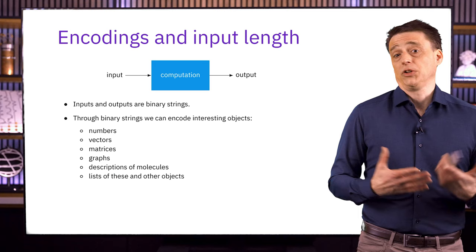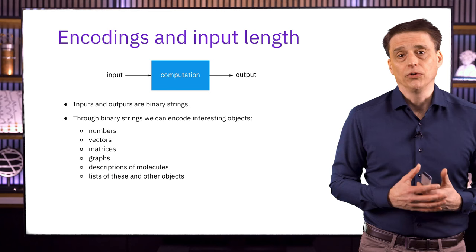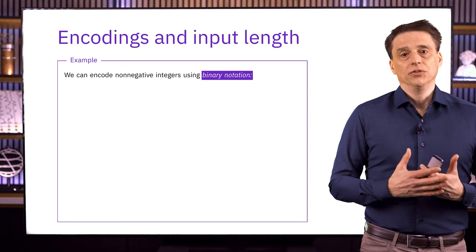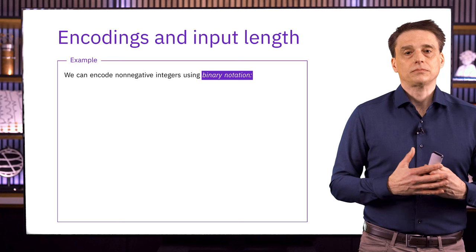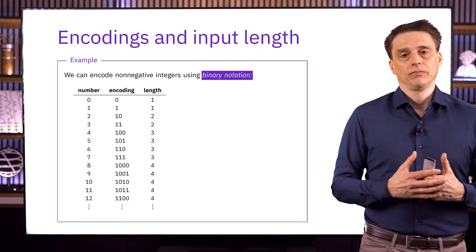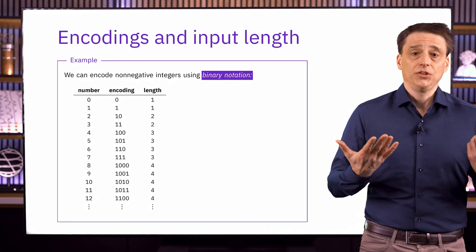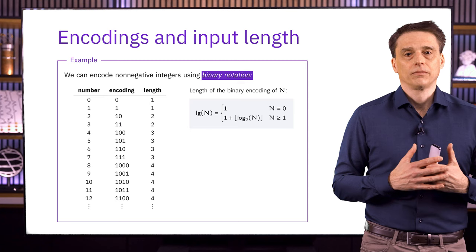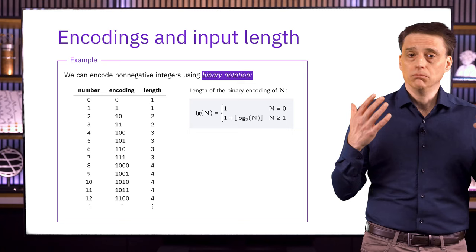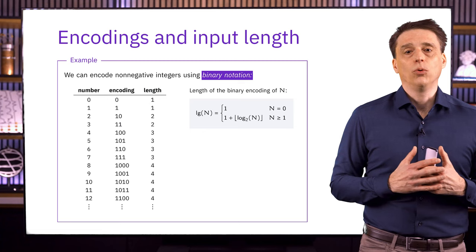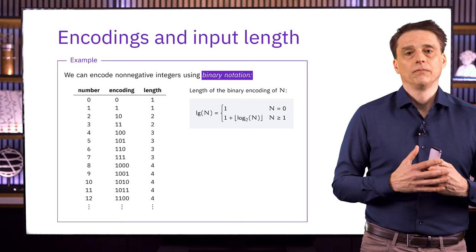As a very simple example, if we want to encode non-negative integers as binary strings, we can use binary notation. In this table, you'll see the first 13 non-negative integers along with their binary representations and the length of each encoding — just the total number of bits needed. There's a simple formula that tells you exactly how many bits are needed in general for any non-negative integer n. Notice in particular that the length of the encoding is generally much smaller than the number itself — it's logarithmic in the number. RSA 1024, for instance, has an encoding with length 1024, but the number itself is of course much larger than that.